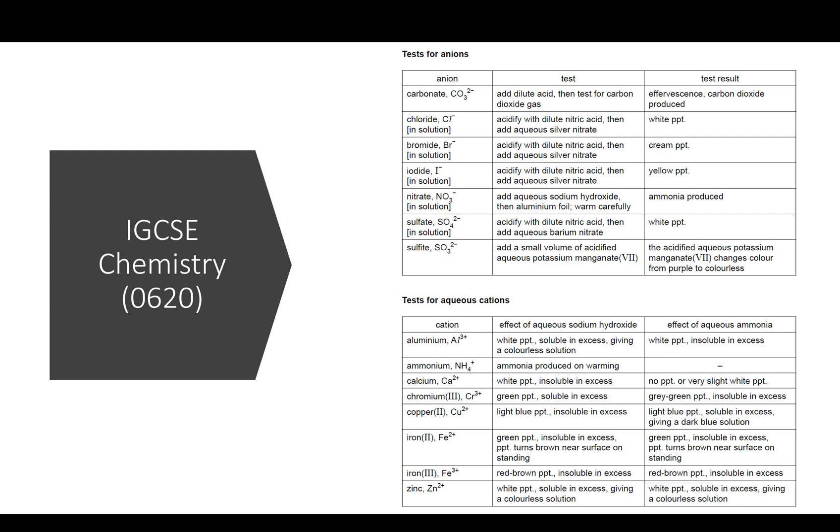While there are different reagents used for testing anions, notice that there are only two used in cation tests: sodium hydroxide and ammonia. This means if you are asked to identify cations of unknown salt solutions, you need to use sodium hydroxide and ammonia as the reagents. You only need to learn the expected observations of the ions. We learn best in small chunks and it's the same with learning this list. Therefore, I have divided the list into smaller sections and will go through each section with you.